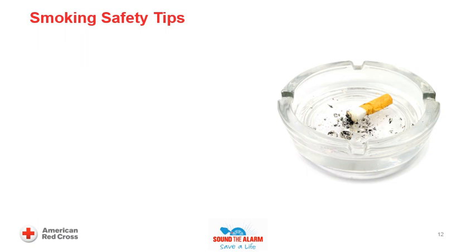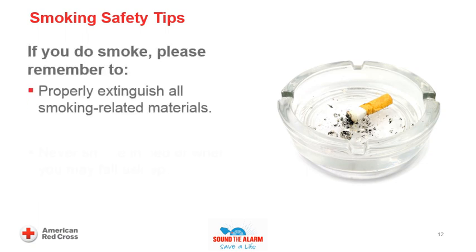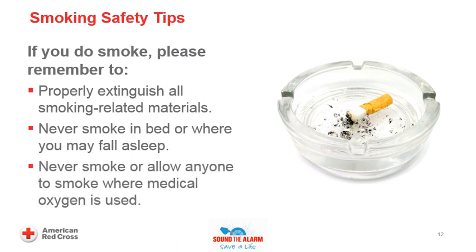Did you know that smoking materials not properly extinguished — including cigarettes, pipes, and cigars — is another common cause of preventable home fires and is the leading cause of home fire fatalities in the United States? Mattresses, bedding, upholstered furniture, and trash are the items most commonly ignited. If you do smoke, properly extinguish all smoking-related materials. Never smoke in bed or where you may fall asleep. Never smoke or allow anyone to smoke where medical oxygen is used, as it can make fires burn faster and hotter.